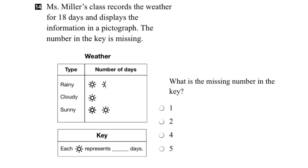In this question, we're given a pictograph that represents the weather recorded by Mrs. Miller's class over 18 days. We have to determine the number of days that this symbol here represents.